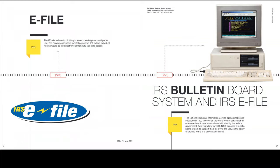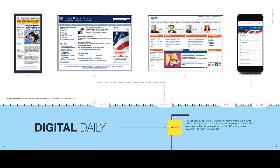IRS Bulletin Board System and IRS e-file: the National Technical Information Service established FedWorld in 1992 to serve as an online locator service for federal government information. Two years later, in 1994, NTIS launched a bulletin board system to support the IRS, giving the service the ability to provide forms and publications online — tax forms went online in 1994. Digital Daily was the first presence of the IRS on the World Wide Web, with a warm and humorous tone designed to resemble a newspaper. The site grew and evolved into IRS.gov, which had more than 609 million visits in 2018.